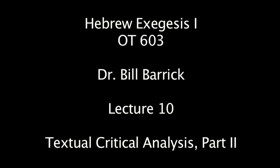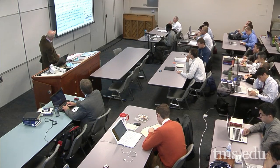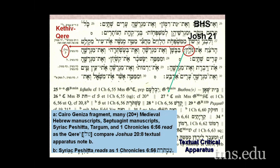We were at Joshua chapter 21 last week, and we talked about looking at the Ketiv-Qere reading there of Golan. We had gone down to the textual apparatus, located that superscript A, looked at the symbols, and then converted those symbols into the statement you see up here on the screen in the blue box at the bottom.